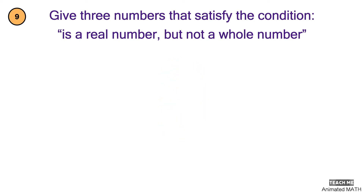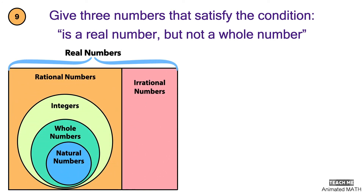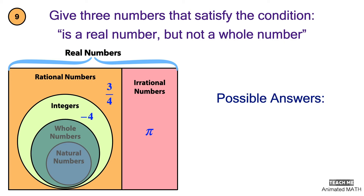Let's have a look at our Venn diagram for the set of real numbers and its subsets. The condition is: it is a real number, but not a whole number. Any number within the colored part of our diagram is an answer. Possible answers are pi, 3 over 4, and negative 4.